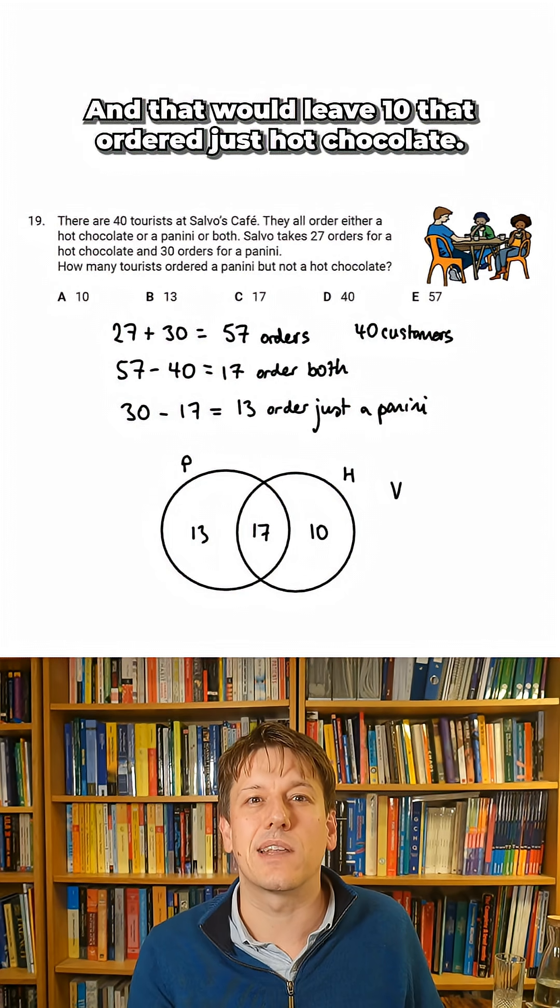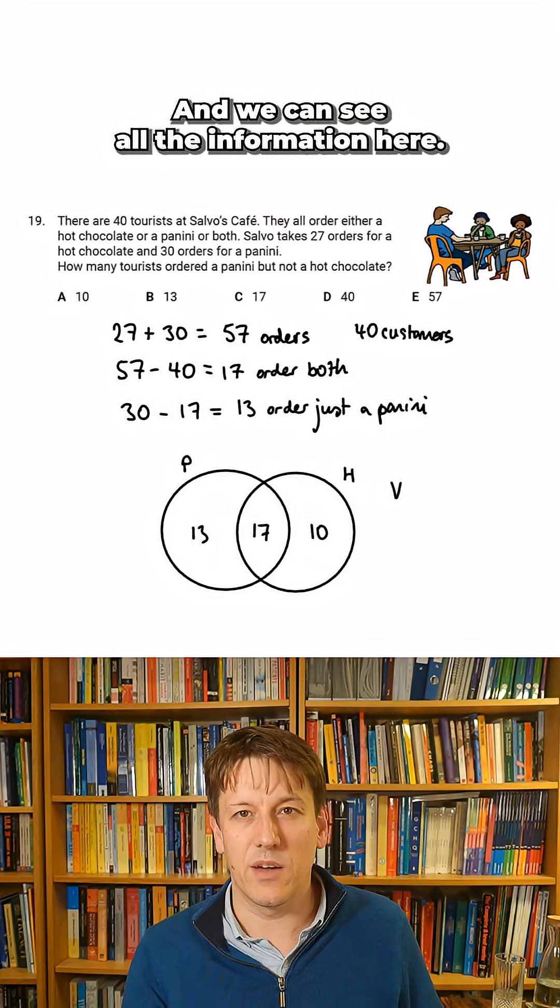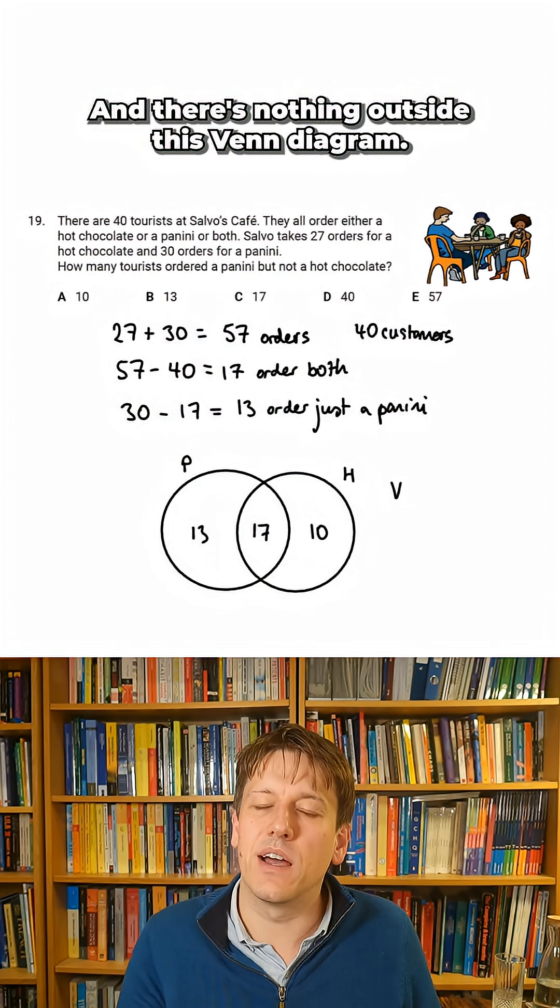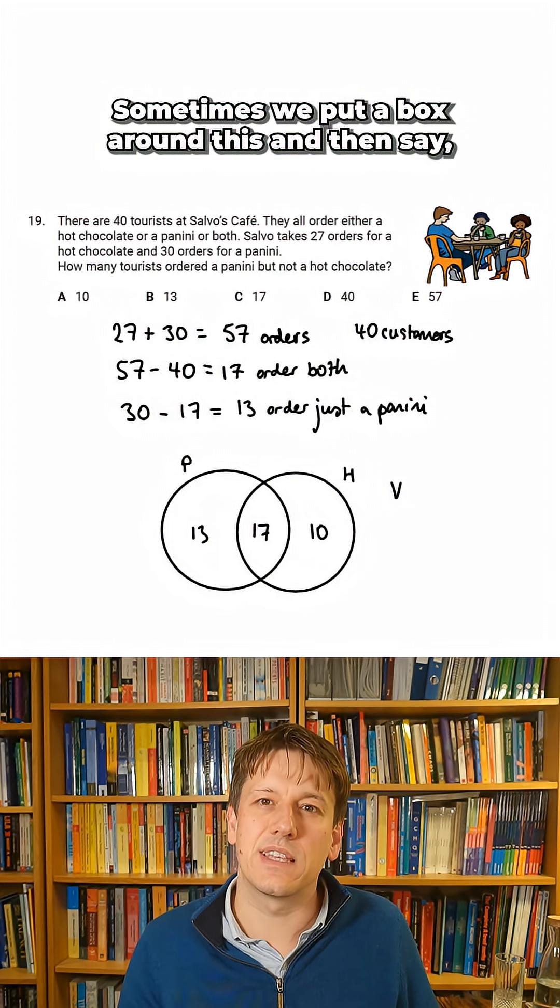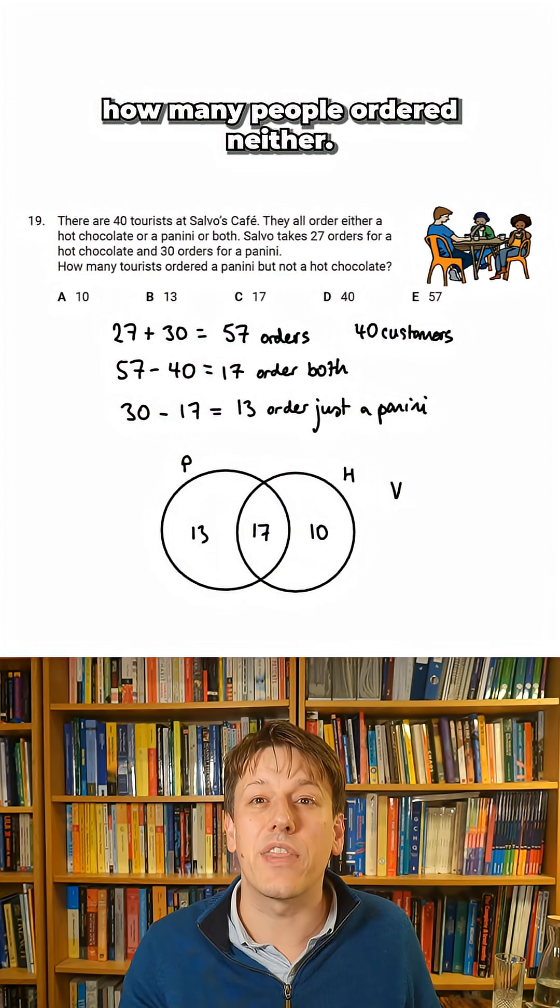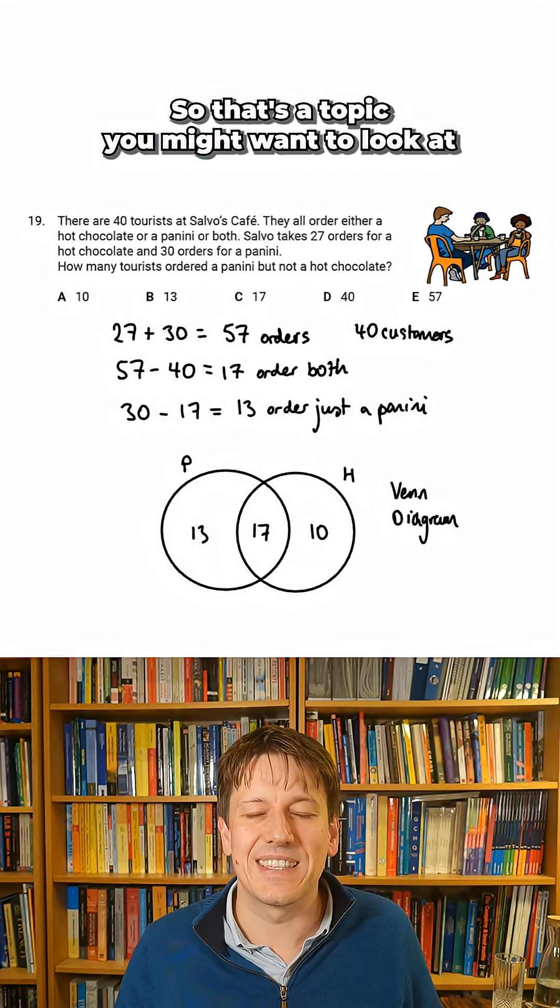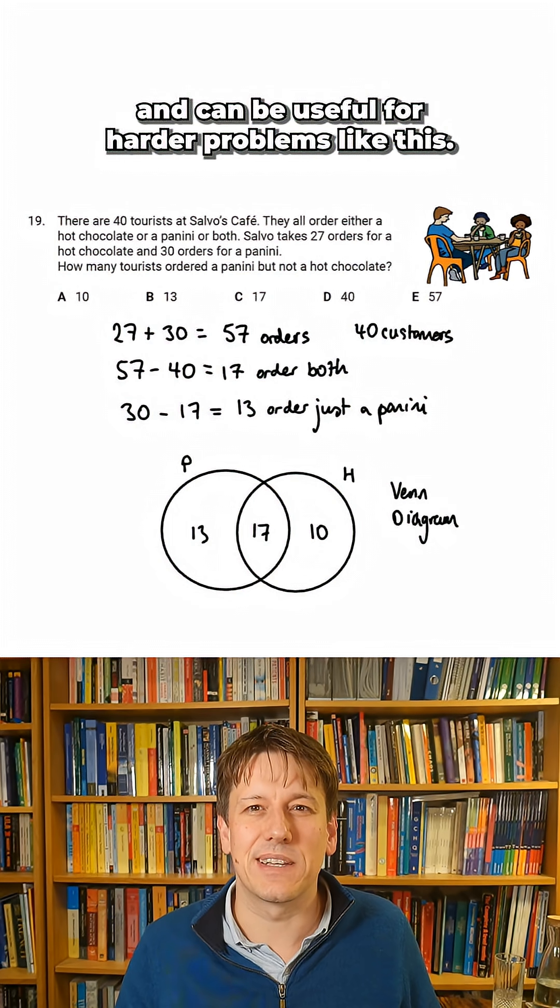13 that just ordered a panini then and that would leave 10 that ordered just a hot chocolate and we can see all the information here and there's nothing outside this Venn diagram. Sometimes we put a box around this and then say how many people ordered neither but everyone ordered something here. So that's a topic you might want to look at and can be useful for harder problems like this.